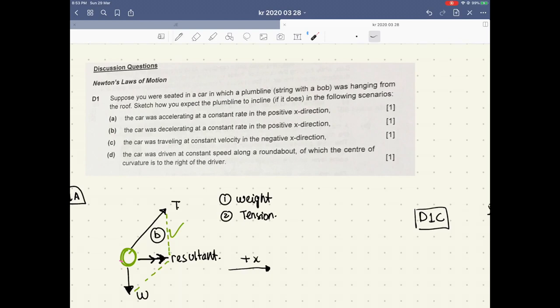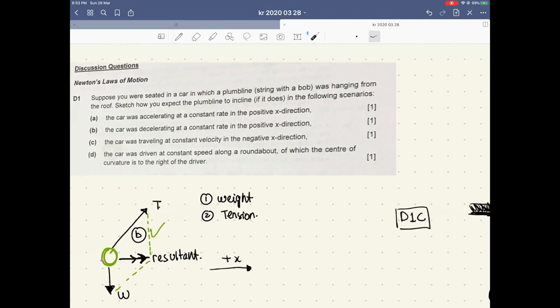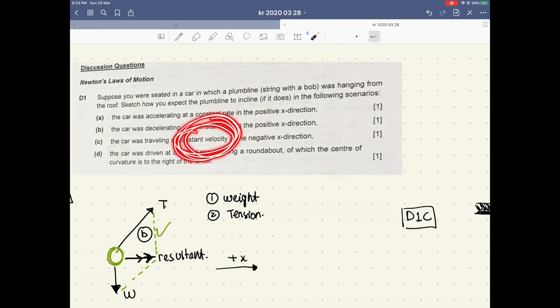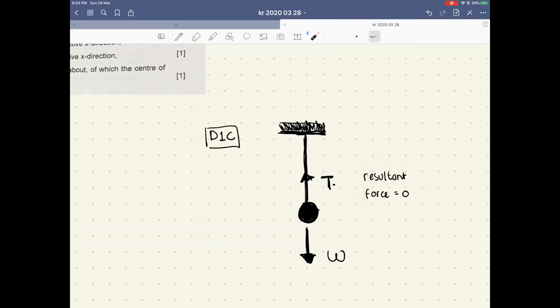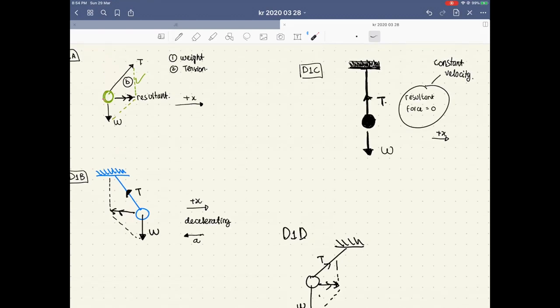Question C. The car was traveling at a constant velocity in the negative x direction. Constant velocity is a very important keyword. We are trained to be sensitive to this word of constant velocity. Constant velocity simply means the resultant force is zero. The positive x-axis is to the right. The resultant force is zero, so it's just vertical. Weight and tension will be equal, so they cancel each other. That's why the resultant is zero.